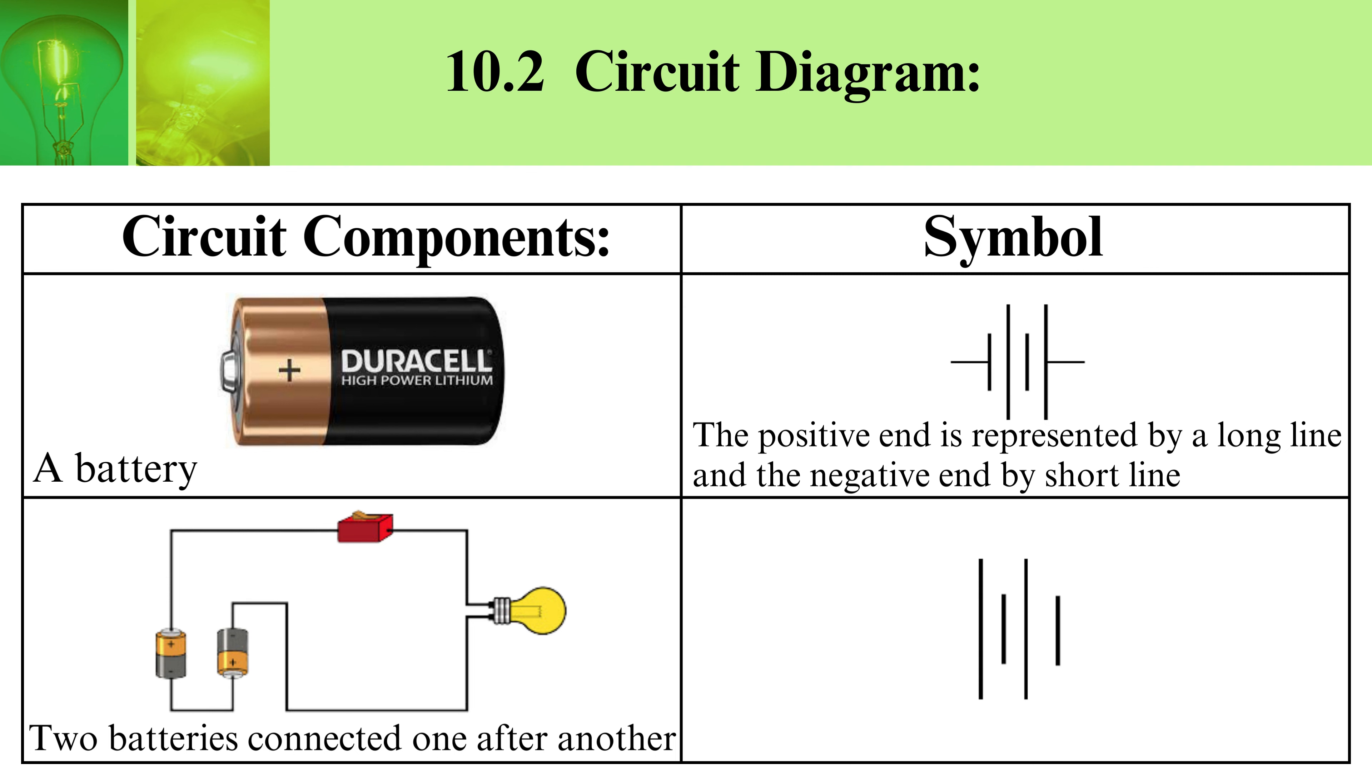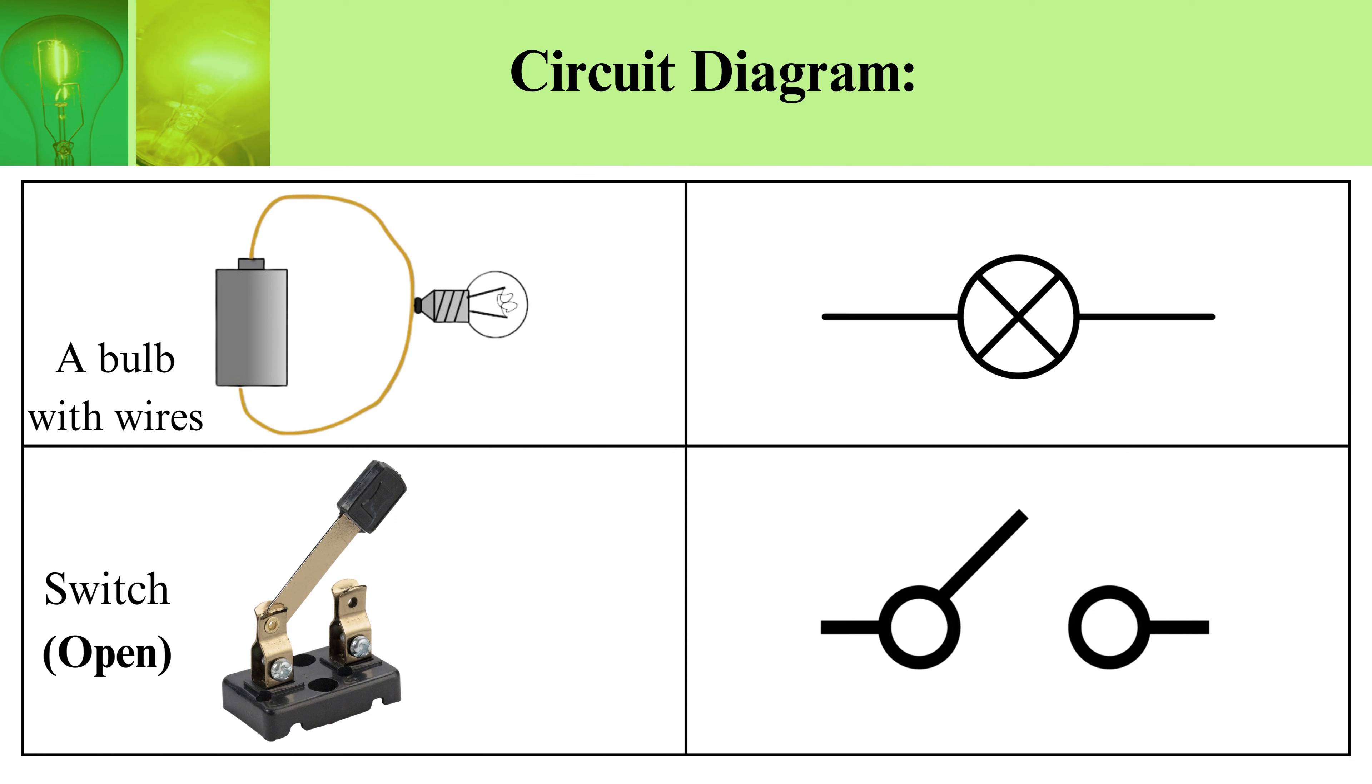Circuit diagram: You can see that the bulb with wires is indicated with a round circle having a cross inside and two lines outside the circle. Switch open is indicated this way: two circles on opposite sides but not connected to each other.